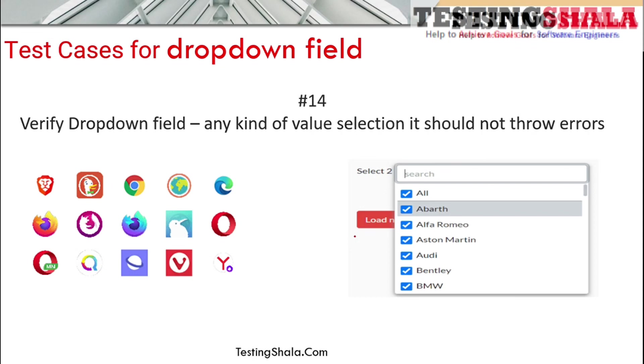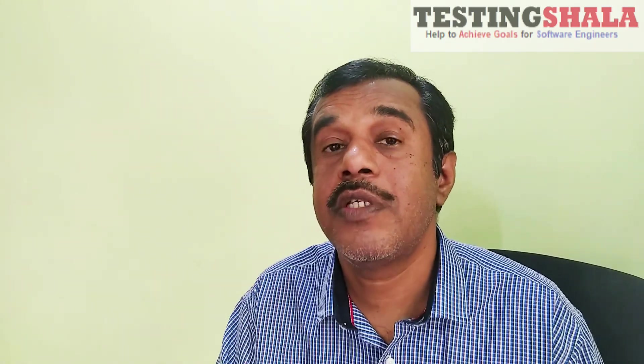The next scenario is that whatever operation you perform on this dropdown, no exception should be thrown and the server should not crash. By covering all the test cases discussed, you can guarantee that your dropdown field really works as expected. I hope you now have a clear idea of the different things we can test for a dropdown. If you liked this video, please give it a thumbs up and subscribe. Thanks for watching — bye for now!